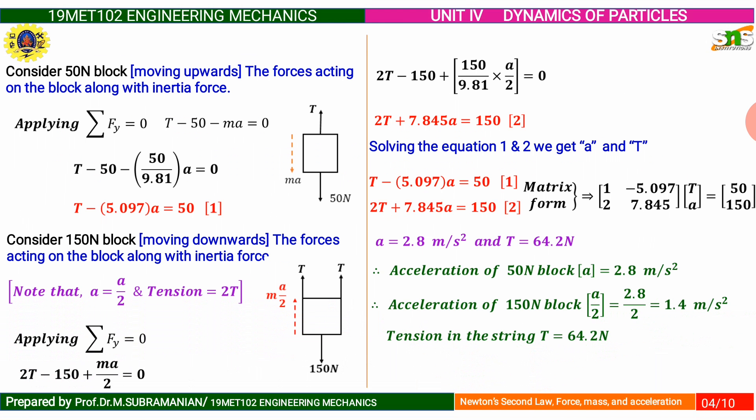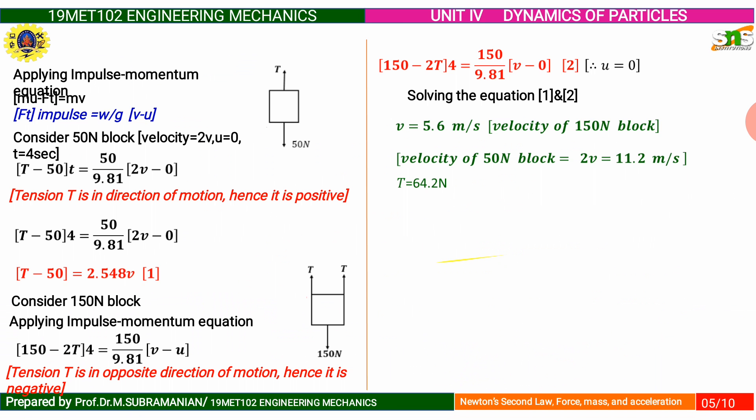Solving Equations 1 and 2, we get the acceleration and tension. Rewriting the two equations in matrix form and using a calculator, we obtain: acceleration A equal to 2.8 meters per second squared. Acceleration of the 150 Newton block is A divided by 2, which is 2.8 divided by 2, equal to 1.4 meters per second squared. Tension in the string T equal to 64.2 Newton.